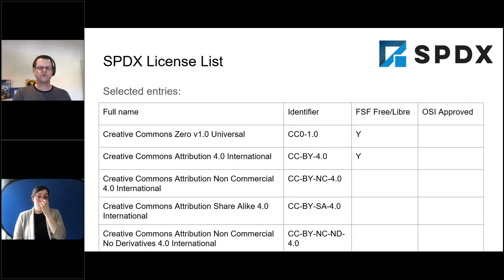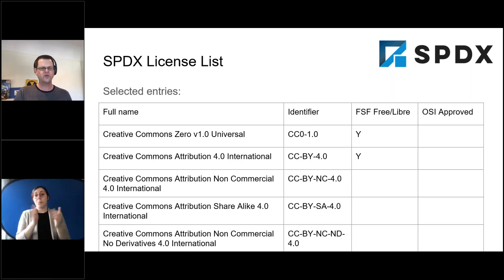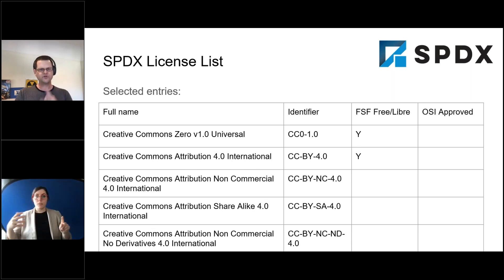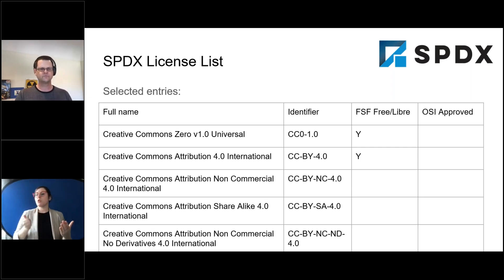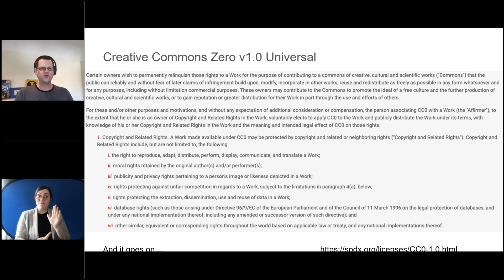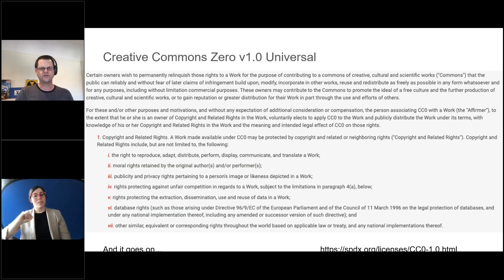If we boil this down to the critical ones — like we saw in Matt's table — SPDX has entries for each of those. You can say CC0-1.0 and mean exactly that license. You don't have to have the entire text of that license in there. As a human, you can be pretty sure you mean exactly which license. And I would like you all to read every single word in the CC0 license... no, that's crazy. These licenses are big, and that's why we have SPDX as this catalog of short identifiers.